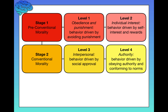Level 4 is called authority. Still within conventional morality, behavior here is driven by obeying authority and conforming to social norms. People at Level 4 might say, "The government says don't steal — it's illegal. The norm is that stealing is not okay, so Heinz shouldn't have stolen."